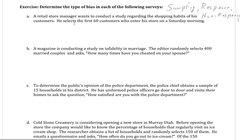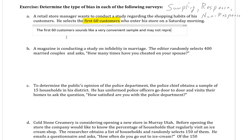Alright, a retail store manager wants to conduct a study regarding the shopping habits of his customers. He selects the first 60 customers who enter his store on a Saturday morning. Okay, so based on that description, particularly the end there, the first 60 customers who enter the store is a pretty convenient sample. The first 60 customers sounds like a very convenient sample and may not represent the entire population of his customers. So sampling bias slash under coverage.